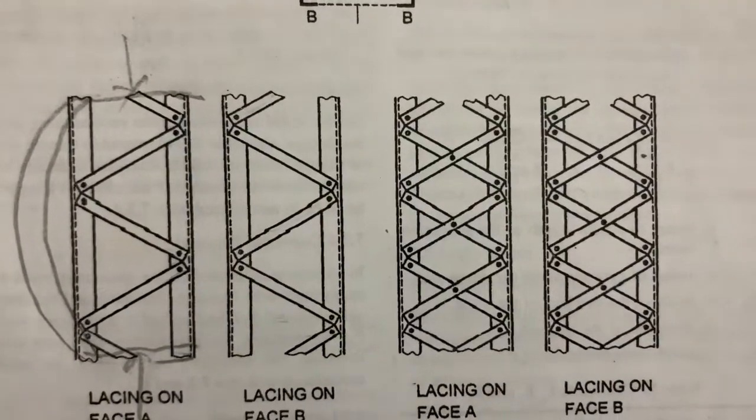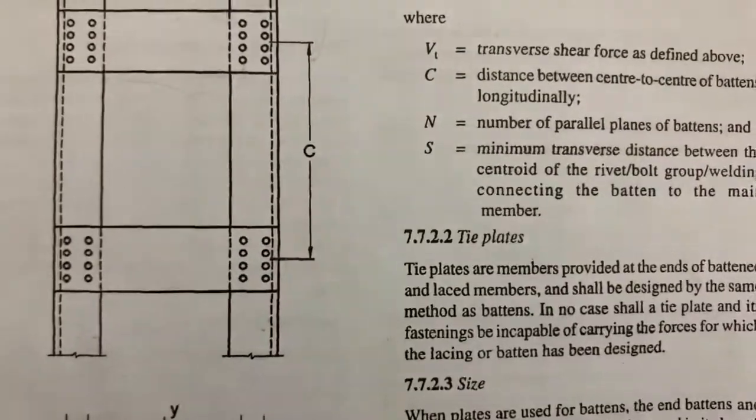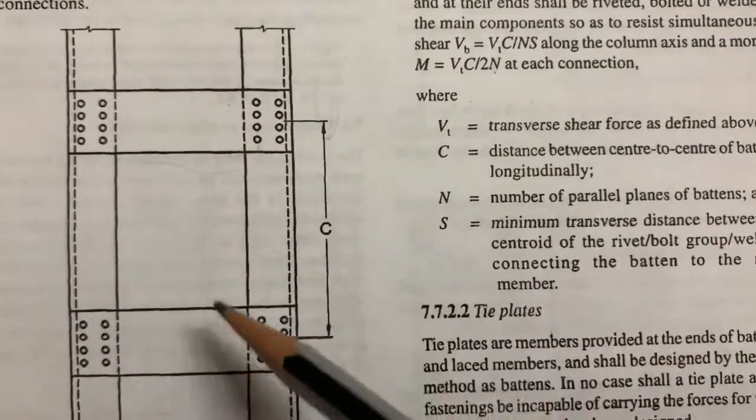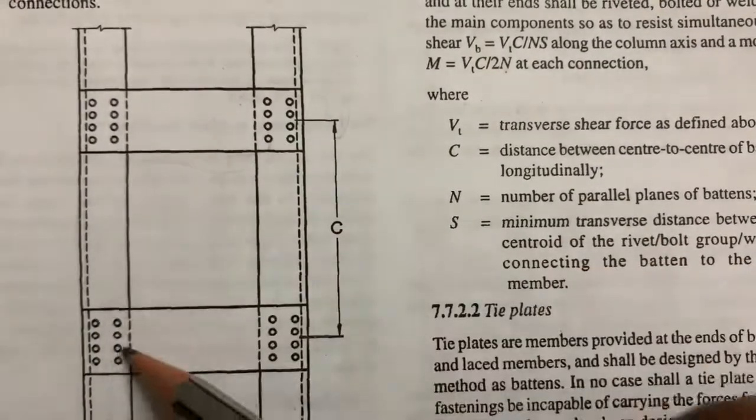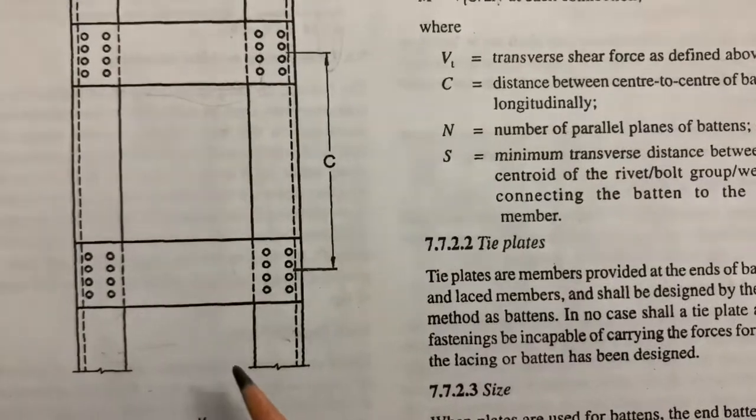One can use batten members instead of lacing. These are the batten plates, connected by using bolting to keep the members in required distance.